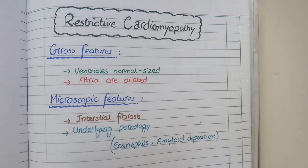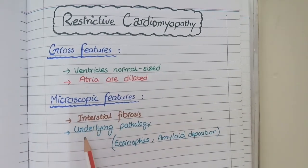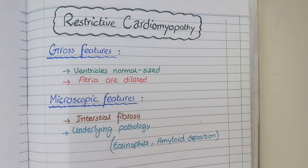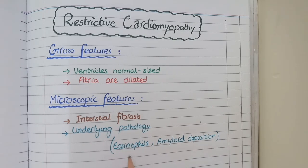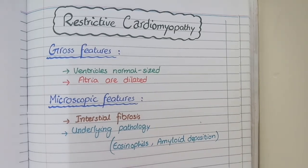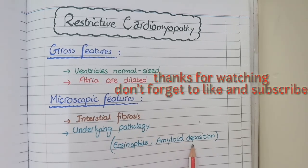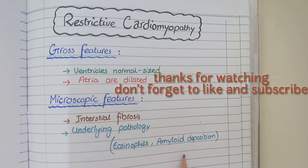On microscopic view of restrictive cardiomyopathy, you will see interstitial fibrosis along with signs of the underlying pathology. If it is caused by Loffler's myocarditis or eosinophilia, you will see eosinophils in the myocardium. If restrictive cardiomyopathy is caused by amyloidosis, you will see amyloid deposition in myocytes. This concludes our discussion on cardiomyopathies.